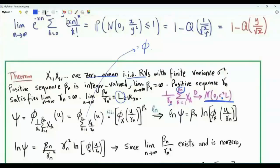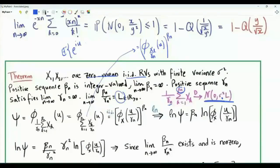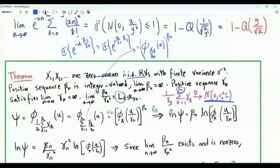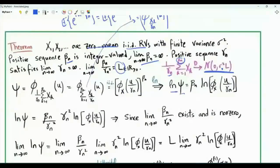The claim is that there is convergence in distribution to a zero mean Gaussian with variance sigma squared times L. To prove this, start with the characteristic function of the sum. Because we are summing iid random variables, the characteristic function of the sum equals the characteristic function of one random variable raised to the power beta n. The characteristic function of x1 over gamma n is the characteristic function of x1 evaluated at u over gamma n, raised to the power beta n. Taking the natural logarithm of both sides gives ln(psi) equals beta n times the natural log of the characteristic function. Then multiply and divide by gamma n squared.